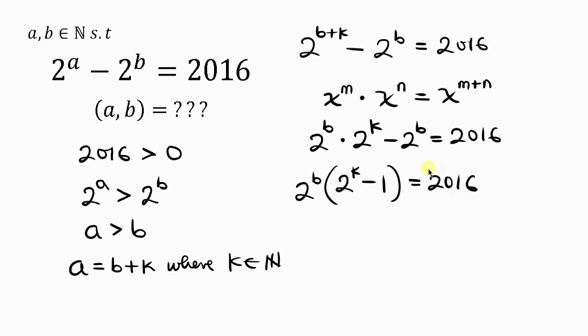Now we're going to be splitting 2016 by multiplying the factors of 2016. So 2^b times (2^k - 1) equals 32 times 63.